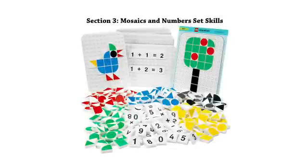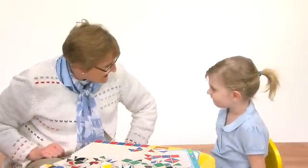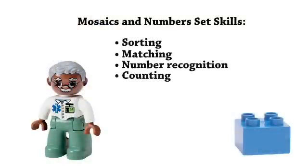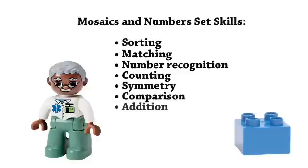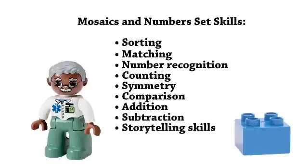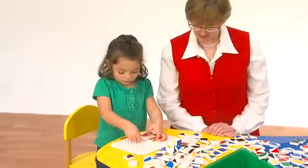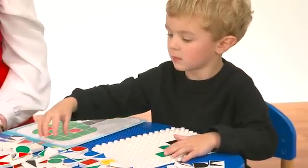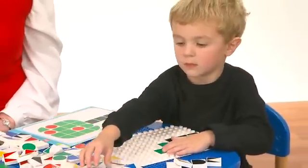Section 3: Mosaics and Numbers Set Skills. Mosaics can be used to help students with literacy and numeracy skills. This product helps students develop sorting, matching, number recognition, counting, symmetry, comparison, addition, subtraction, and storytelling skills, and enables them to begin building skills for working with shapes, patterns, and sequences. Placement of the tiles can help improve small motor skills and visual recognition of patterns.